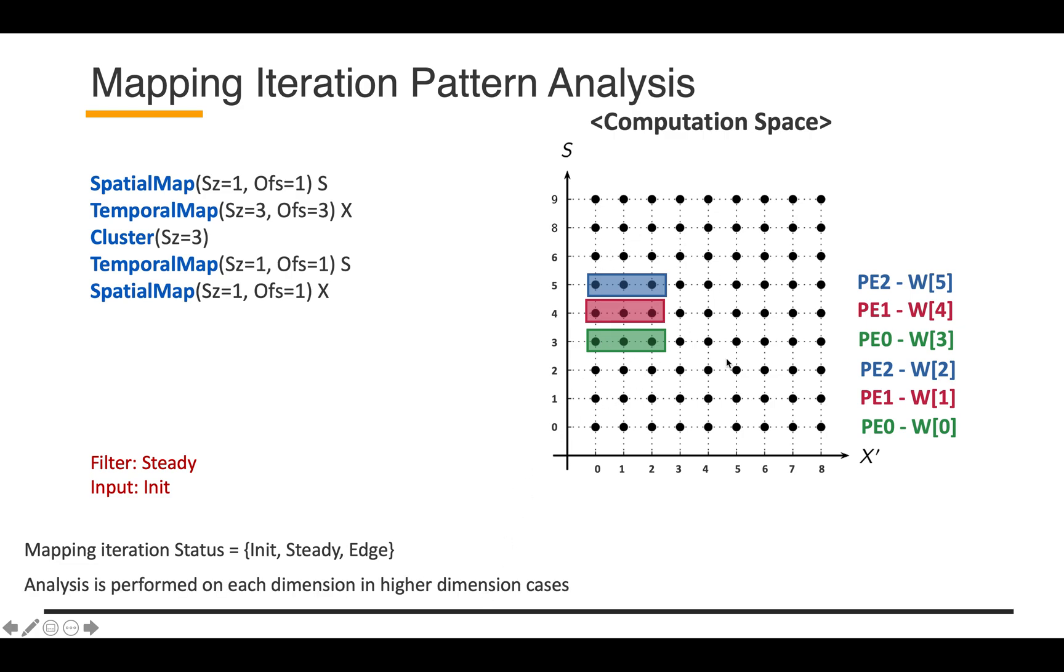This is a CONV1D example where we treated the indices as just the number of data points. But in higher dimensional cases, such as CONV2D, the analysis is per dimension. We use the coupling relationship of the data dimensions to each tensor to identify which tensor changes for each iteration pattern.